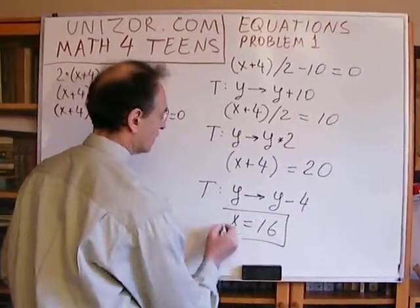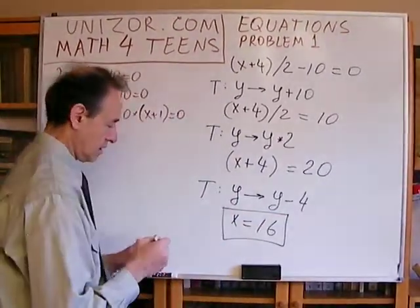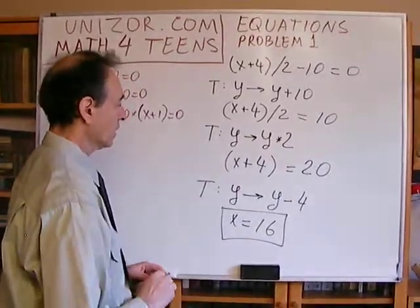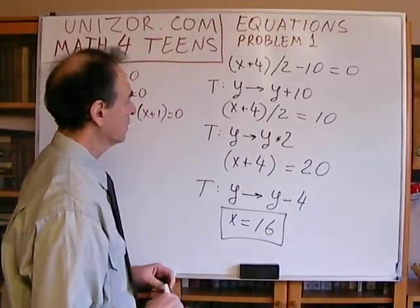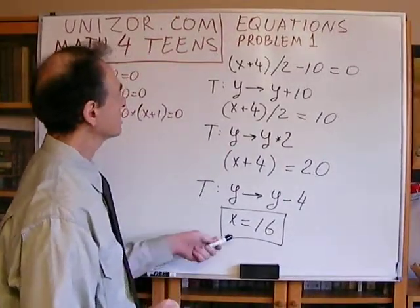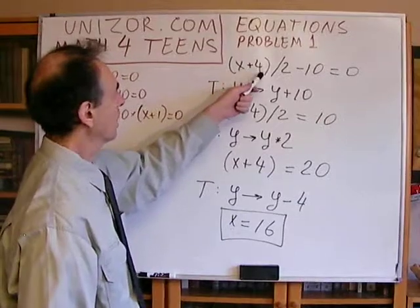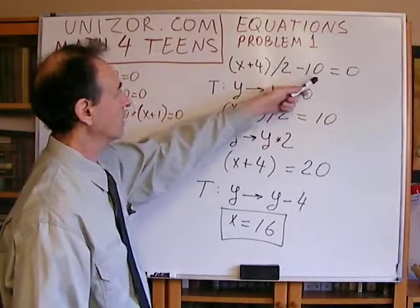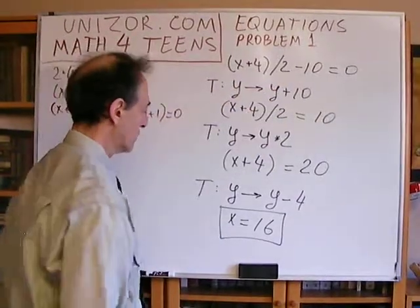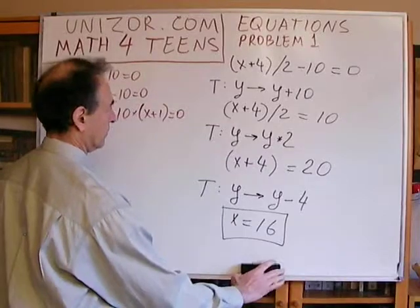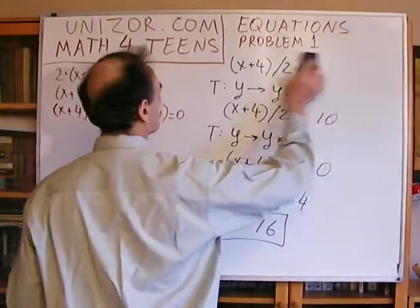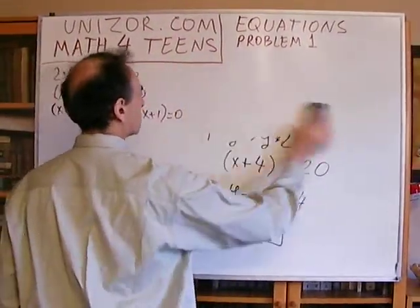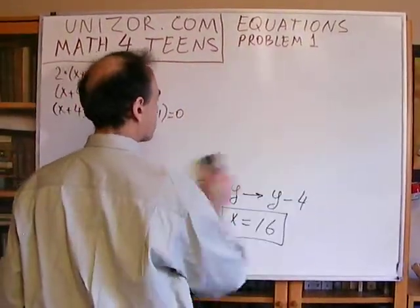Not mandatory but still a good thing to do: checking — 16 plus 4 is 20, divided by 2 is 10, minus 10 is 0. Everything is fine. That's equation number 2. And now equation number 3.